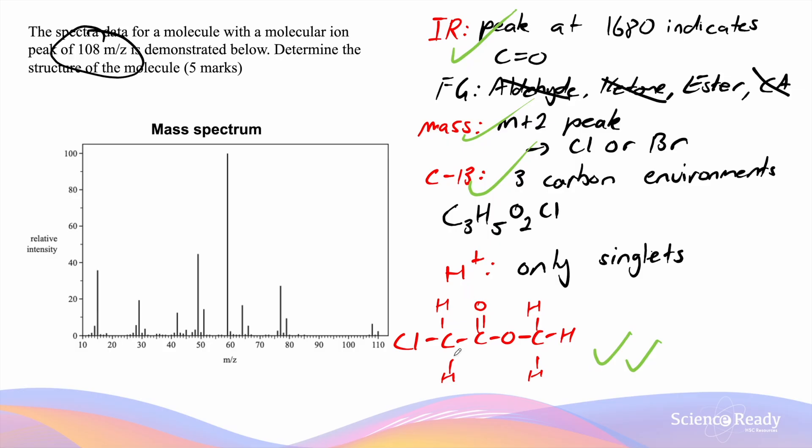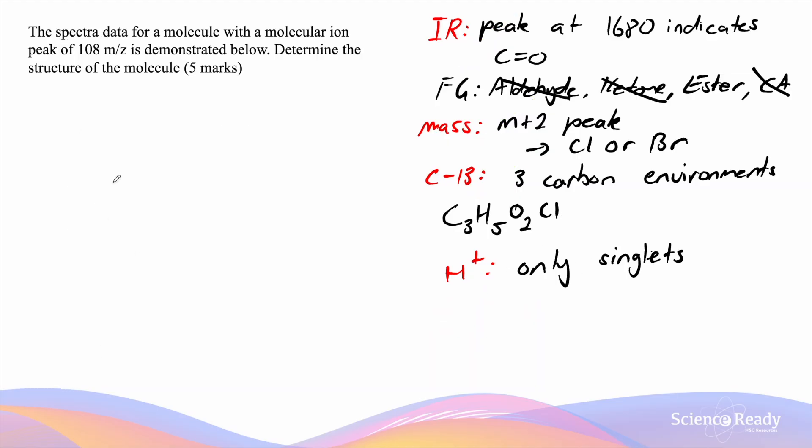Also, only singlets are produced because for the carbons that contain hydrogen, the adjacent carbons do not contain any hydrogen. So now we can properly complete our answer by drawing a large diagram of our compound. And this structure is going to be our final answer.